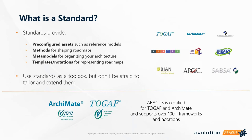A sense of the current enterprise can be achieved through standards such as Archimate and TOGAF. Across the board, these standards are used as a toolbox — something that we can tailor and extend, but they're a starting point. They give us pre-configured assets, methods for shaping roadmaps, metamodels for organizing the architecture, and templates or notations. They give us a running start to our technology transformation.